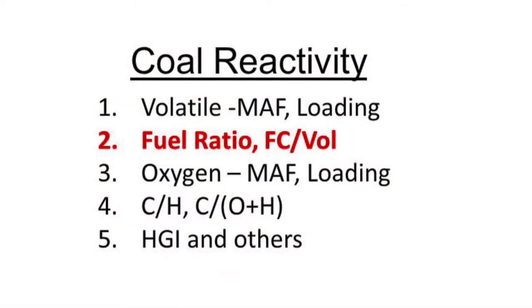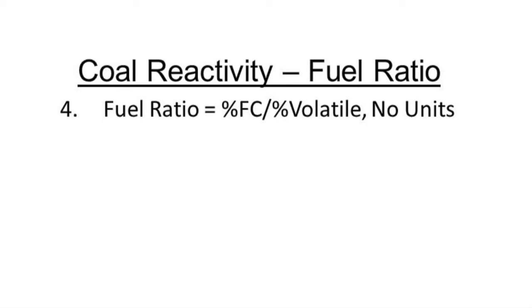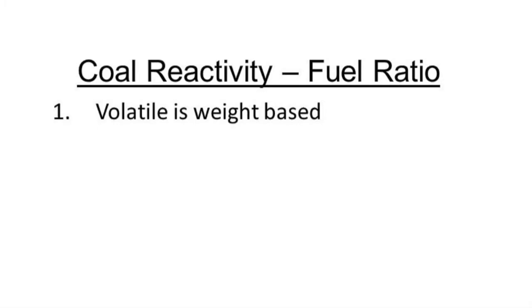One of the ways that boiler designers, boiler manufacturers, low-NOx burner manufacturers, and low-NOx people look at coal reactivity is what they call the fuel ratio, which equals the fixed carbon divided by the volatile matter. As volatile matter goes up, fixed carbon comes down, so you get a compounding impact on that. Keep in mind that the volatile matter is on a weight percent basis and the fixed carbon is also weight percent, but it's calculated by difference — so it's a somewhat inaccurate number because it carries the sum of the errors involved in the measurement of volatile, moisture, and ash.